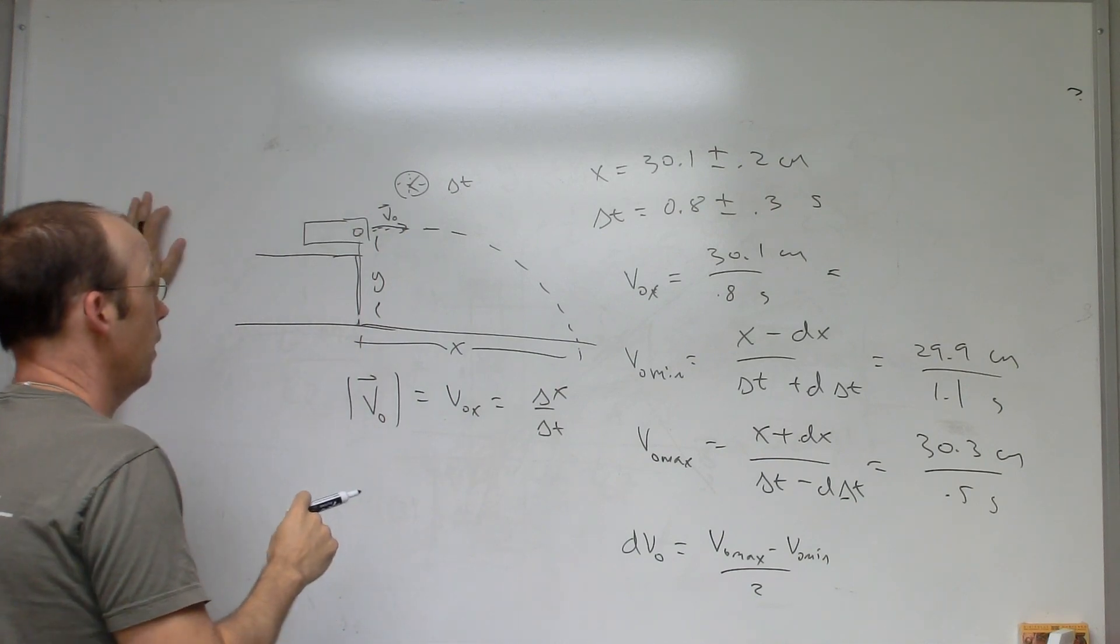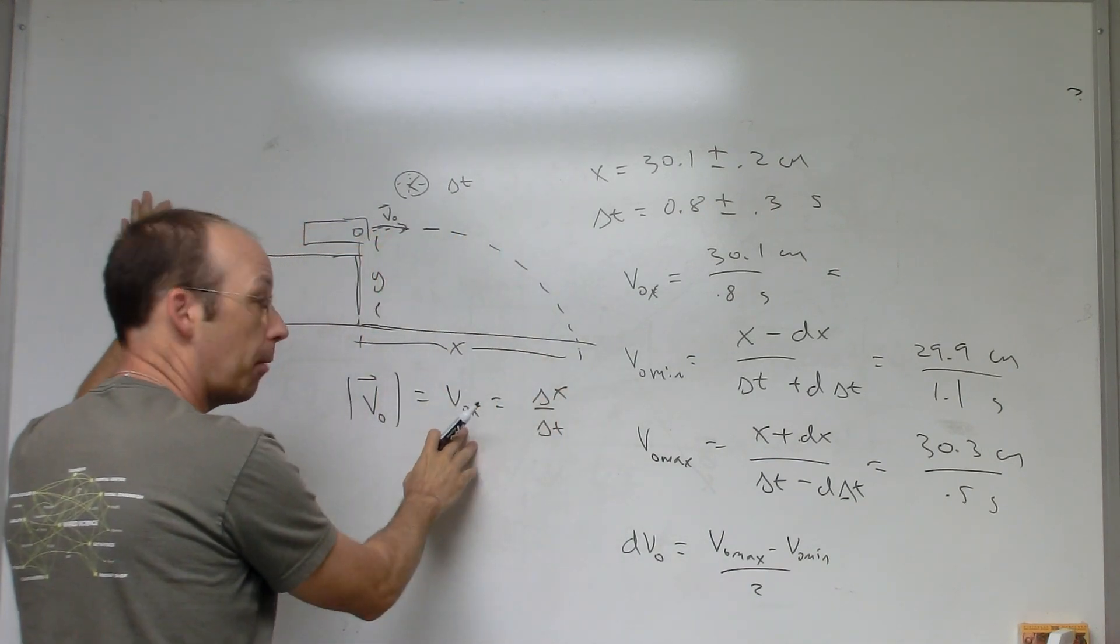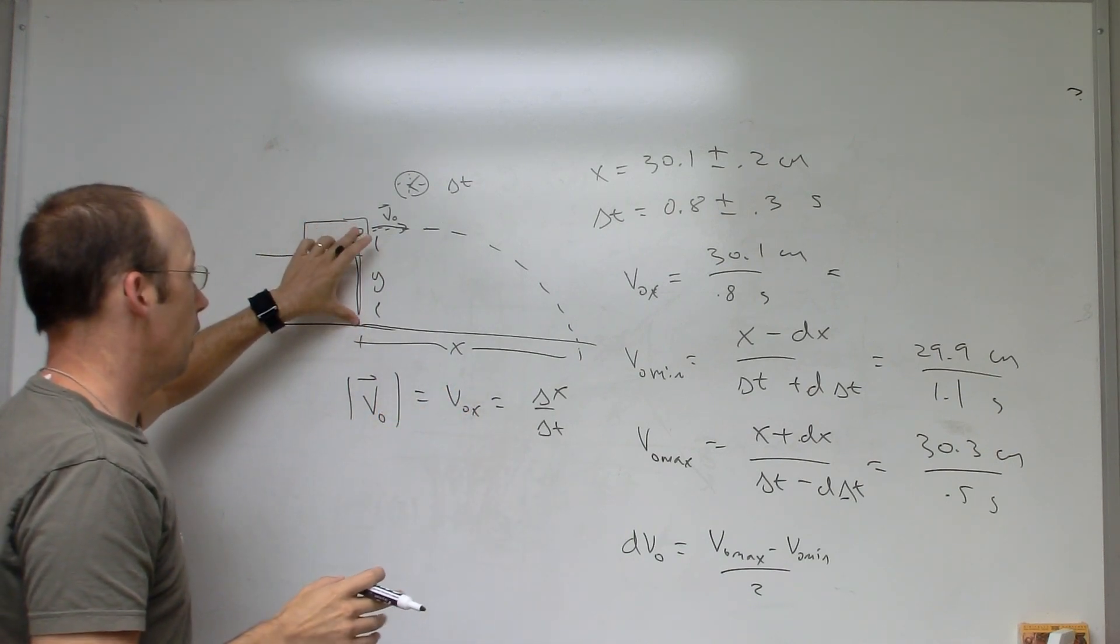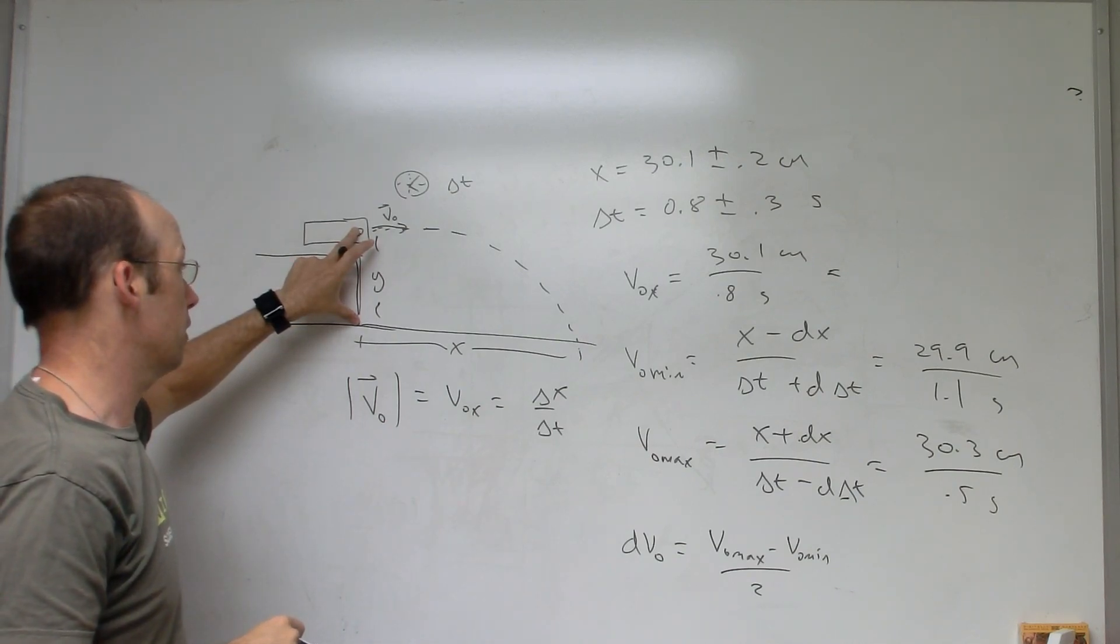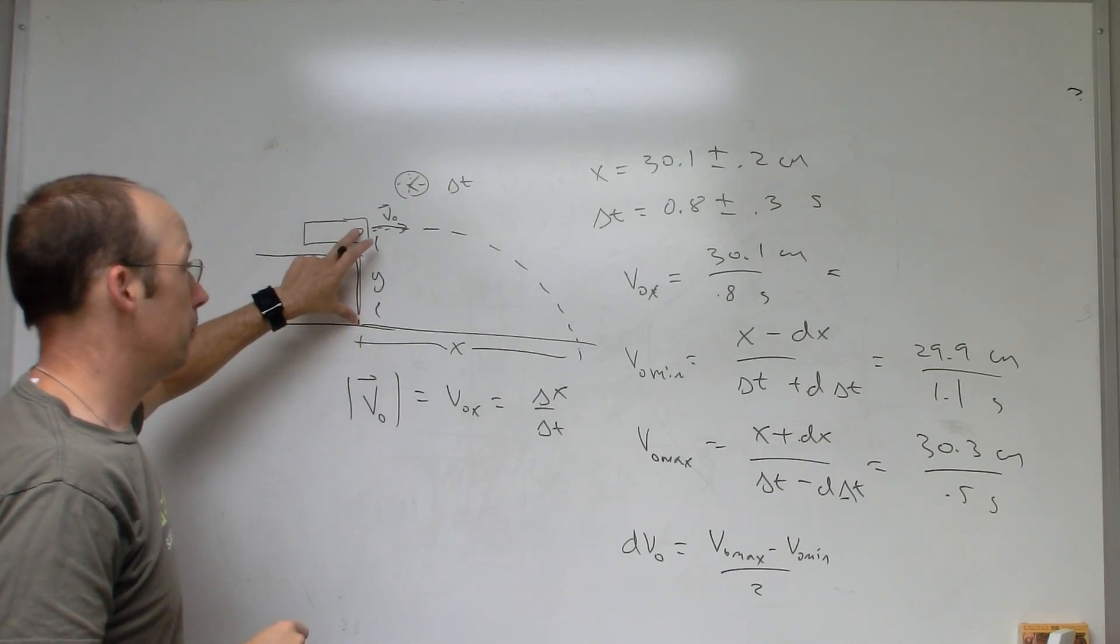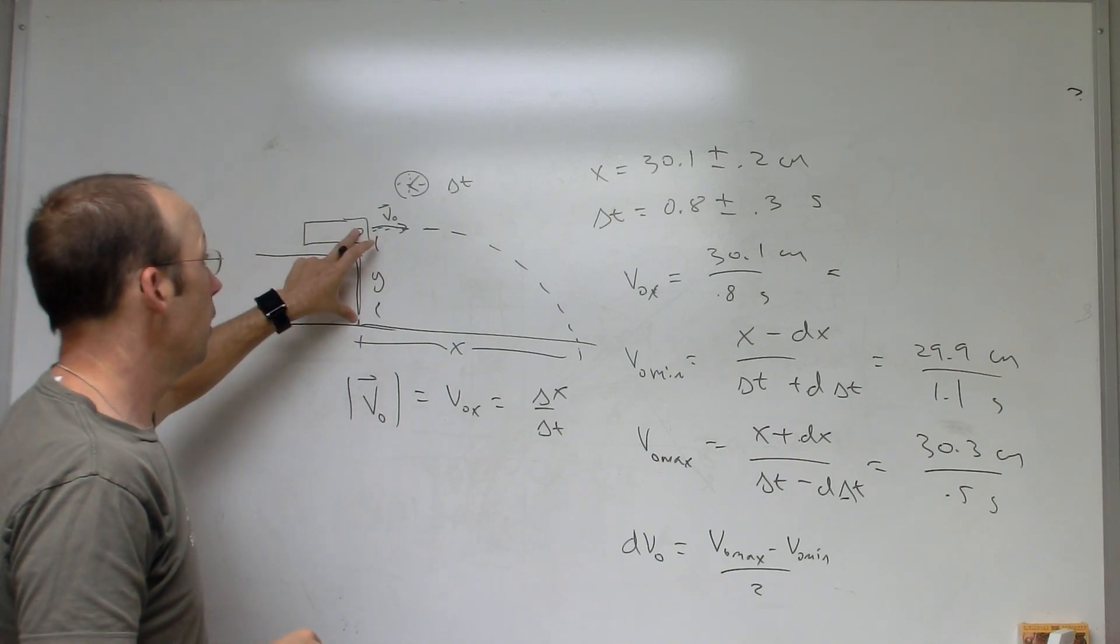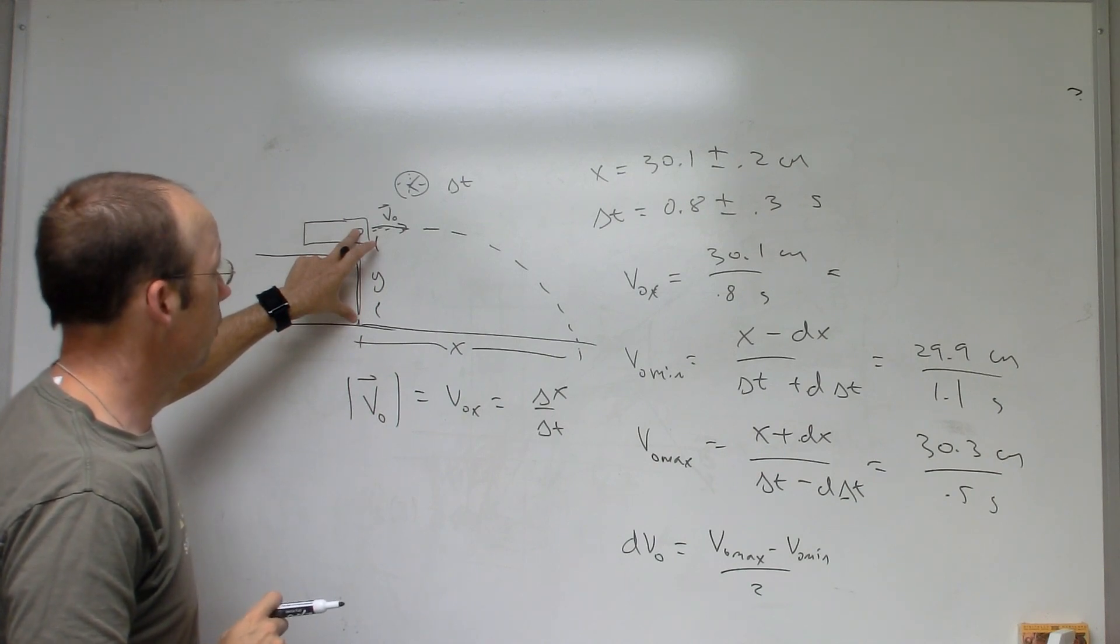Remember that every number has uncertainty. If you can, this is one where I wouldn't remeasure the y height and get them to be with a standard deviation. What I would do is measure once and just approximate the uncertainty. So that should get you started.